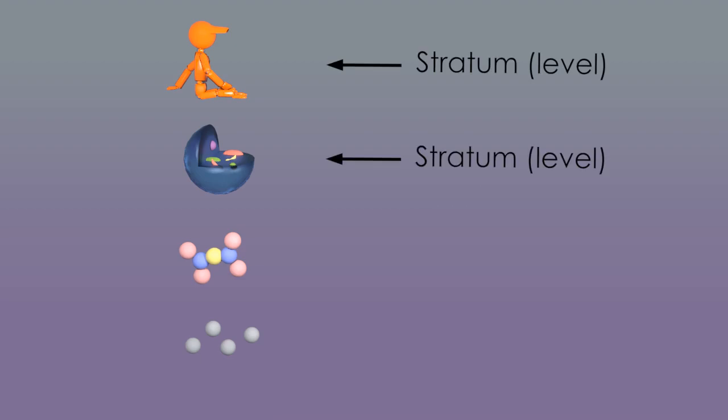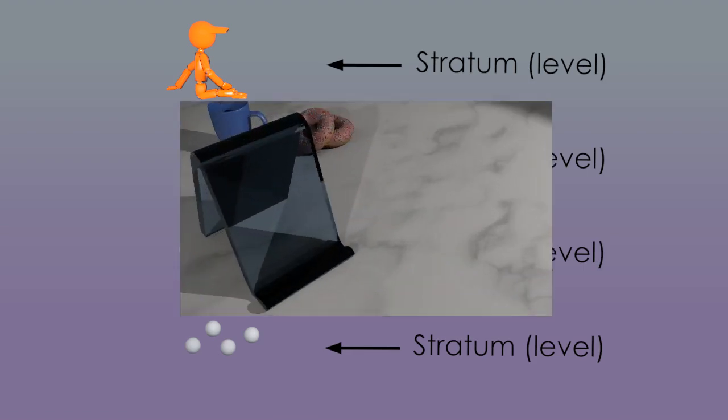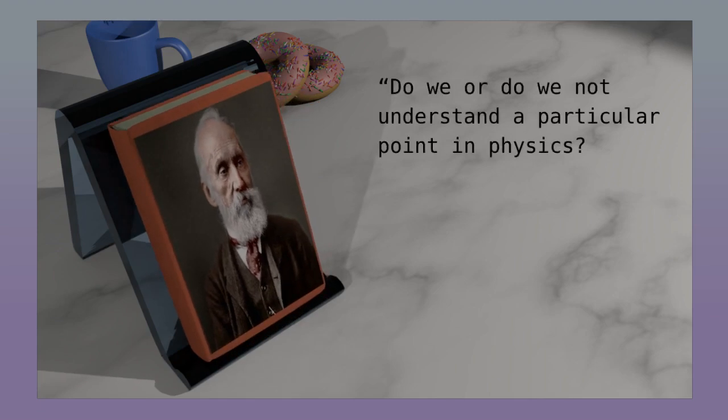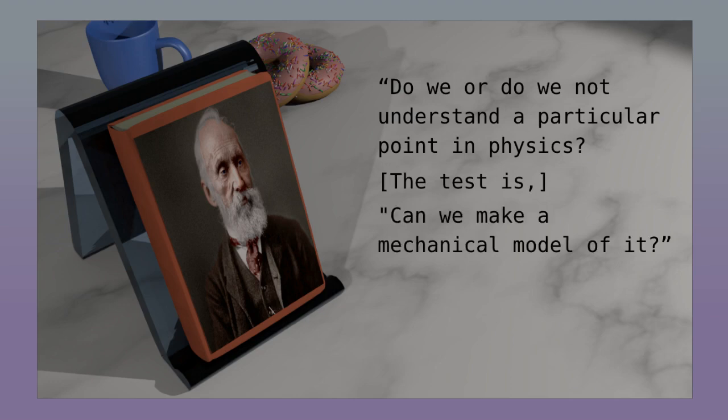Now, it feels very natural to pick things apart to understand them better. This is called reductionism. A person is made of cells, which are made of molecules, which are made of particles. These are different levels or different strata. And as we go deeper in the hierarchy, we feel that we understand better. There's a great quote by Lord Kelvin about reductionism. Do we or do we not understand a particular point in physics? The test is, can we make a mechanical model of it? Remember, it was Lord Kelvin who speculated about vortex atoms.